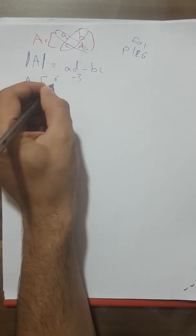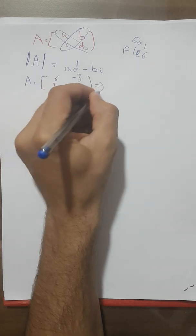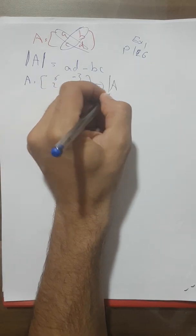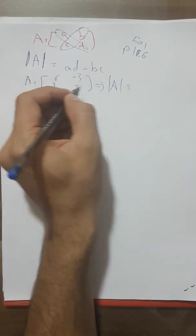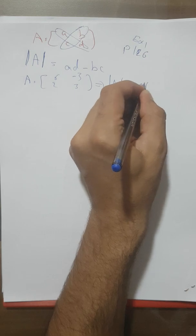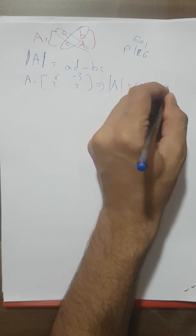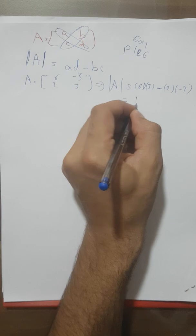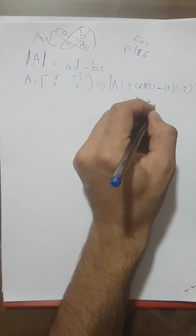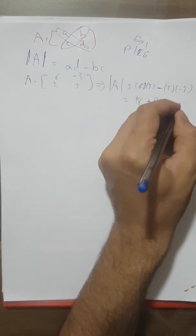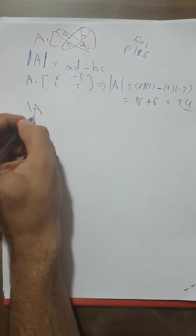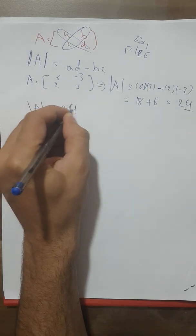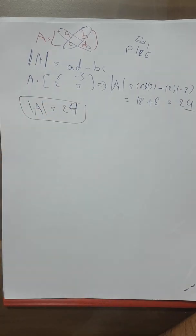The matrix is: 6, 3 / -2, 3. So the determinant of A equals 6×3 minus (-2)×3, which equals 18 plus 6, which equals 24. So the determinant is 24. That's how to find the determinant of a 2×2 matrix.